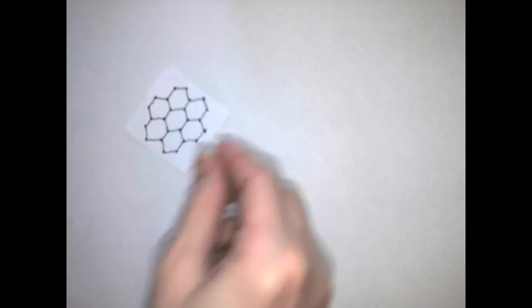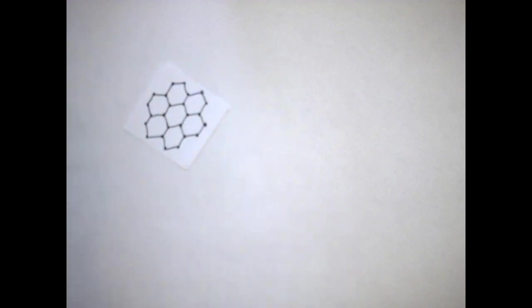If there are many carbon atom rings all attached together, then we get this pattern that looks like a honeycomb. When the hexagon connections represent carbon atoms, we call this graphene.